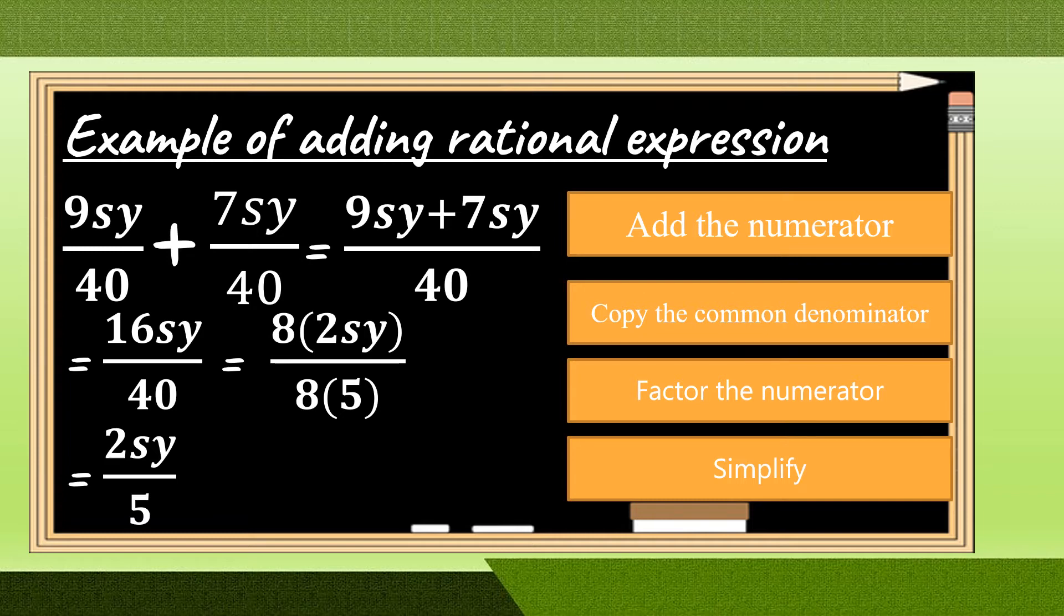We will get 16SY over 40, then factor the numerator. We will come up to 8 multiplied by 2SY over 8 multiplied by 5. Then, simplify and we will get the final answer of 2SY over 5.